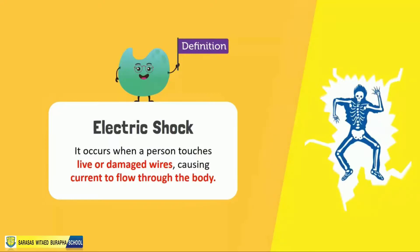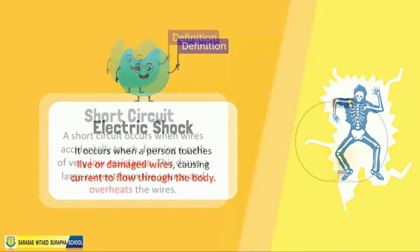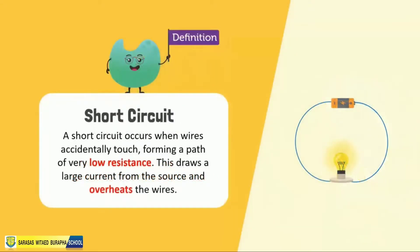An electric shock occurs when a person touches live or damaged wires, causing current to flow through his or her body. Besides electric shocks, unsafe use of electricity can also cause short circuiting.